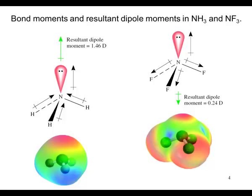In the case of nitrogen trifluoride, the fluorines are more electronegative than the nitrogen, so the pull is away, and also the pull of the lone pair of electrons pulls the electrons toward it. The resultant dipole moment is much smaller, 0.24 compared to 1.46.